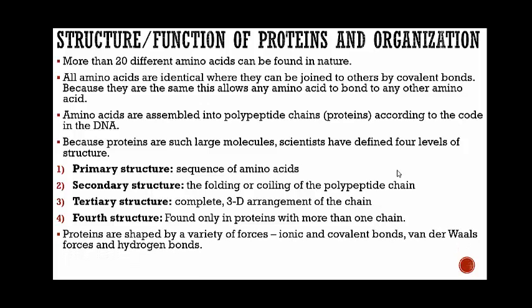Because proteins are such large macromolecules, scientists have defined four levels of structure: primary (the sequence of amino acids), secondary (the folding or coiling of the polypeptide chain), tertiary (the complete 3D arrangement of the chain), and a fourth structure found only in proteins with more than one chain. Proteins are shaped by ionic and covalent bonds, van der Waals forces, and hydrogen bonds. Protein shape is important but that's for next time — if you have questions, bring them to class or post a comment below.